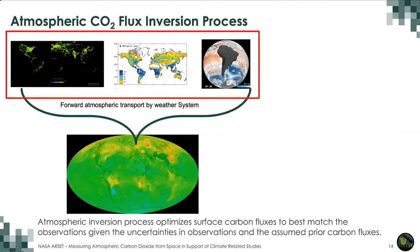Surface carbon fluxes cannot be easily observed, but what we can observe is atmospheric CO2 concentration. So how do we derive fluxes from atmospheric CO2 concentration? The process to calculate carbon fluxes with atmospheric CO2 concentration is called atmospheric CO2 flux inversion.